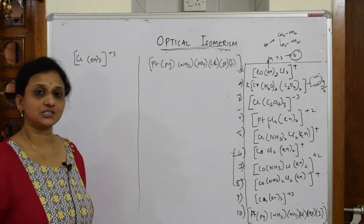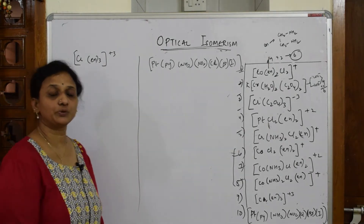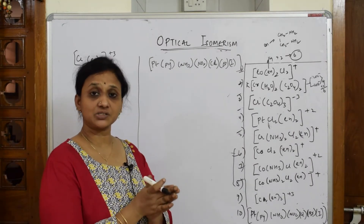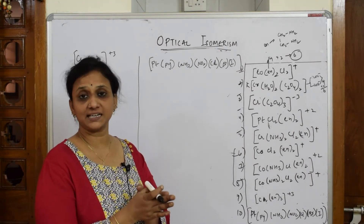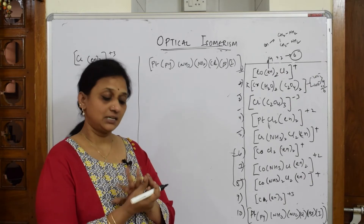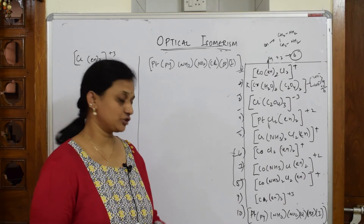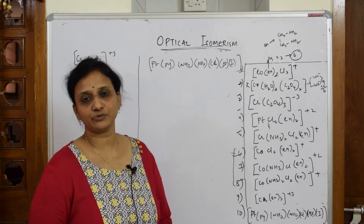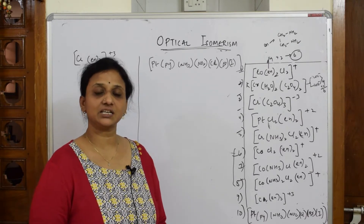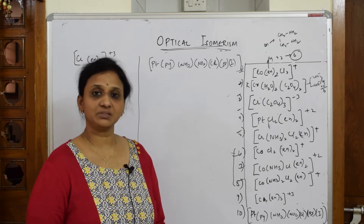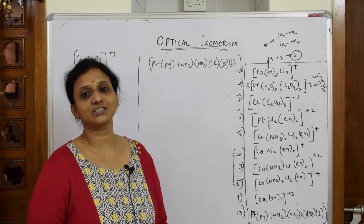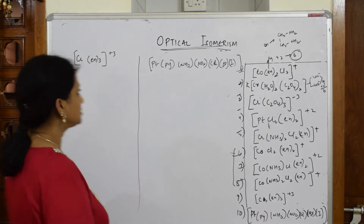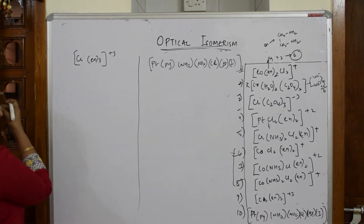Let us come back and do the last two examples. By now you should have understood that cis is going to show a mirror image, while trans will not have optical activity. We'll finish off with this concept — I've covered all possible questions on optical activity. In the exam, please try to attempt this question; it is actually the easiest question and we don't want to lose that one mark.